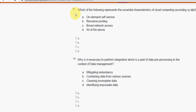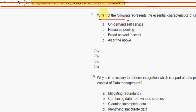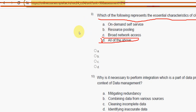Ninth question: which of the following represents the essential characteristics of cloud computing according to NIST? For the ninth question, the answer is again option D — all of the above.